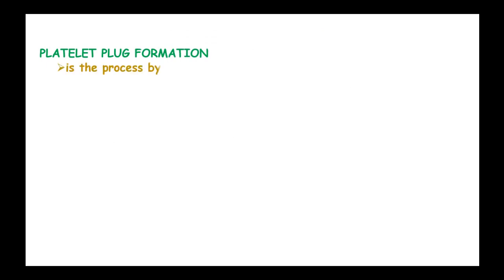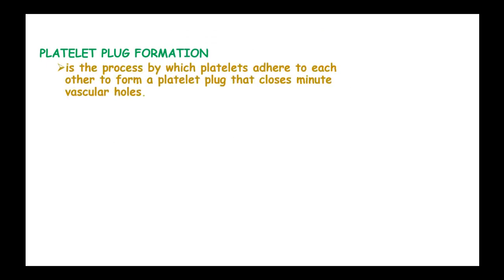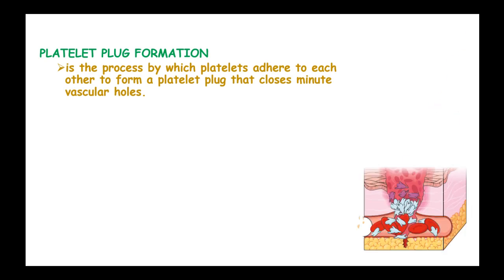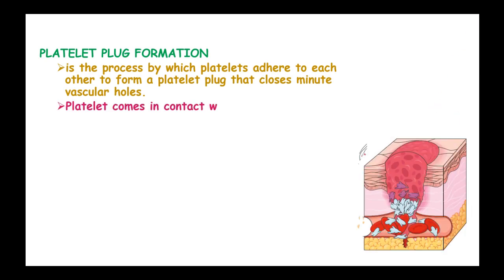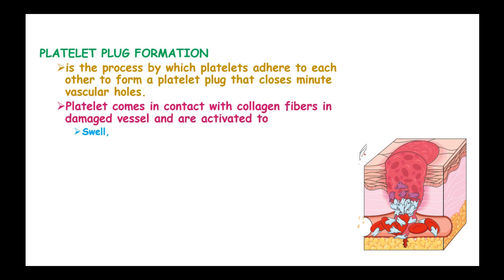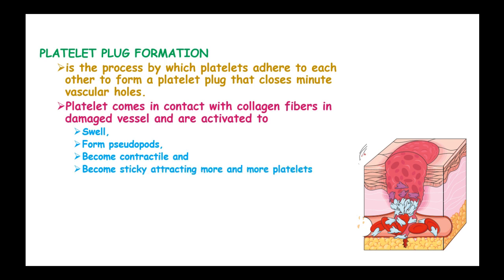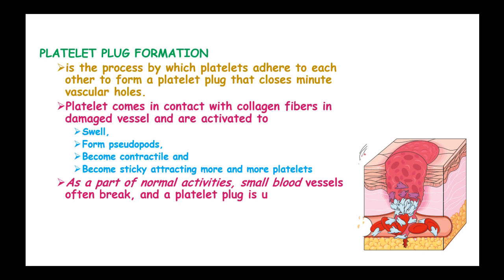The second step is platelet plaque formation, and is the process by which platelets adhere to each other to form a platelet plaque which closes minute vascular holes. Platelets come into contact with collagen fibers in the damaged vessel and are activated to swell, form pseudopods, become contracted, and become sticky, attracting more and more platelets. As part of normal activities, small blood vessels often bleed, and platelet plaque is usually sufficient to stop bleeding.